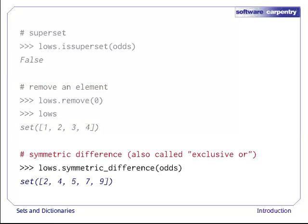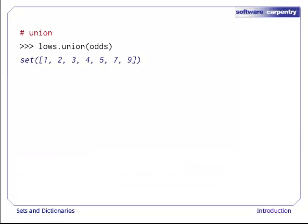Here's another method that creates a new set. Symmetric difference is sometimes called exclusive or. It returns the values that are in one set or another, but not in both. It's useful from time to time, but you'll probably use plain old union more often.